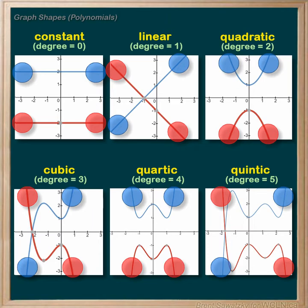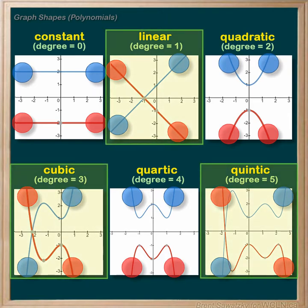We can recognize some definite trends here. Trend number one: the relationships with odd degrees — that is one, three, five — they all start in the bottom left and end in the top right. With the negatives of those odd degrees all starting in the top left and ending in the bottom right.